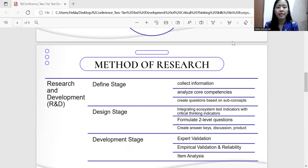Define stage. This step aims to collect information for the development of the instrument and how to analyze, such as analyzing the characteristics of students and analyzing core competencies, basic competencies, and creating a grid of questions based on material sub-concepts and indicators of critical thinking skills.